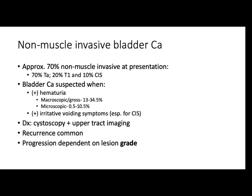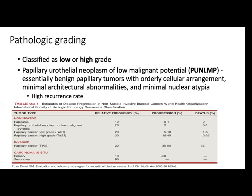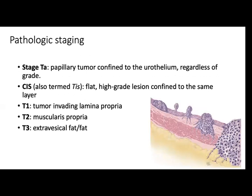This is for non-muscle invasive, which is different from muscle invasive. It may be classified as high or low risk. There is such a thing as papillary urothelial neoplasm of no malignant potential — essentially benign papillary tumors with early cellular arrangement. As seen in this table from Campbell, papillary high-grade cancer has a relative frequency and progression rate of 15 to 40. Carcinoma in situ is also frequent with a high progression rate.